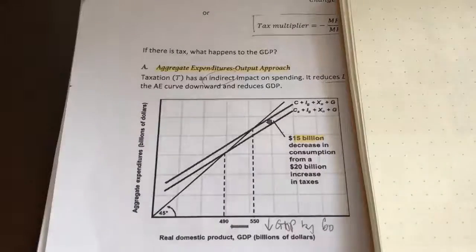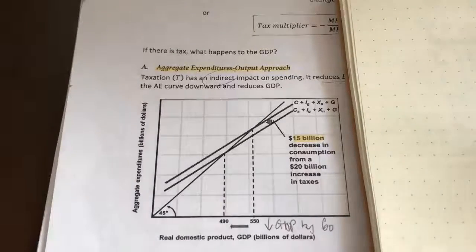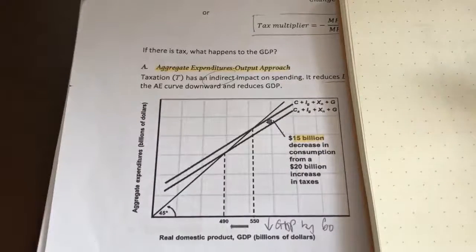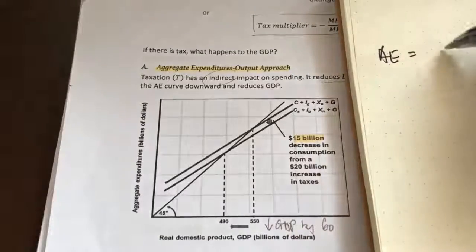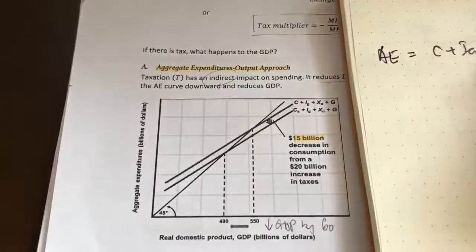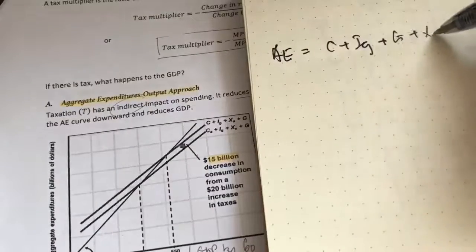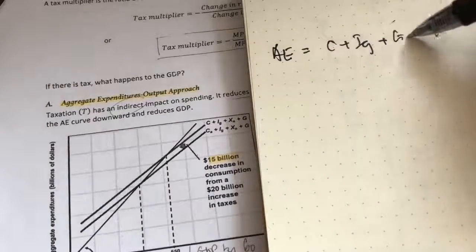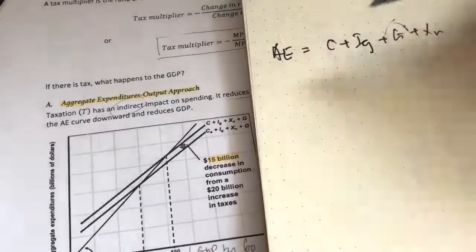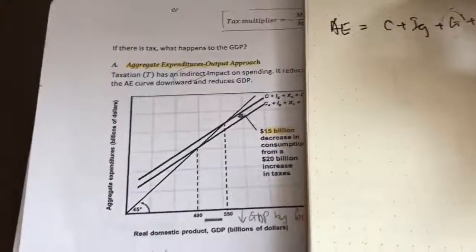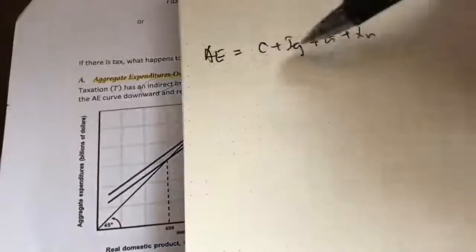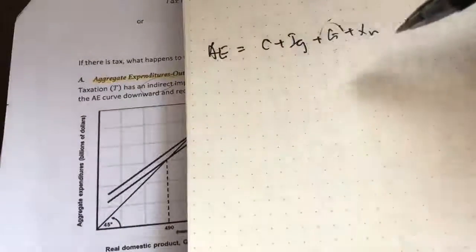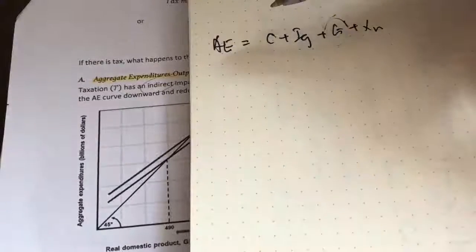When we talk about the G multiplier before, government spending has a direct impact on aggregate expenditure because aggregate expenditure is C plus IG plus G plus XN. So whenever there's a change in government spending, it will directly impact aggregate spending. Taxes, however, have an indirect impact because if you look at the formula, there is no T — no taxation element here. So how does it affect aggregate spending? When there's taxation, it will basically impact consumption.